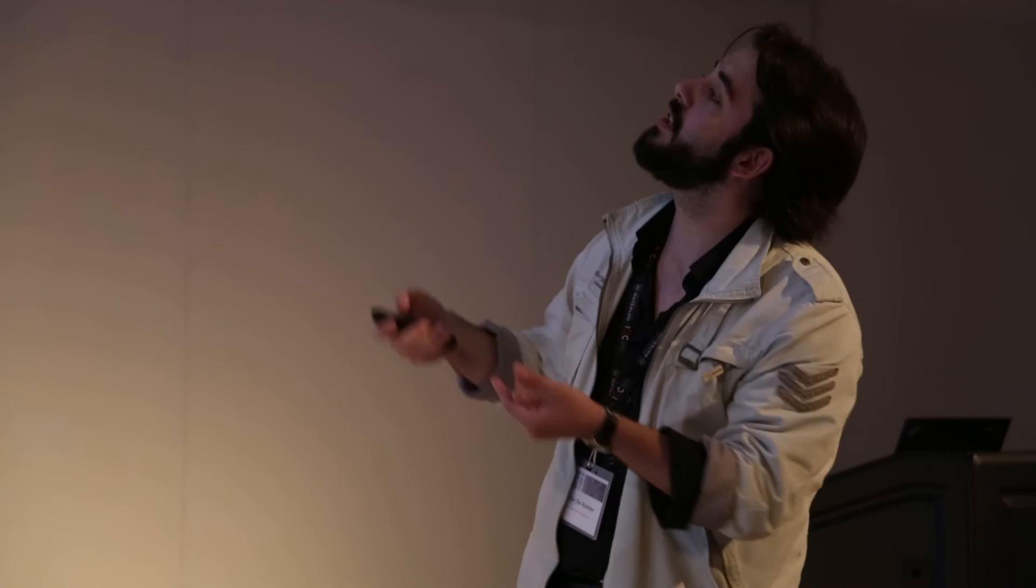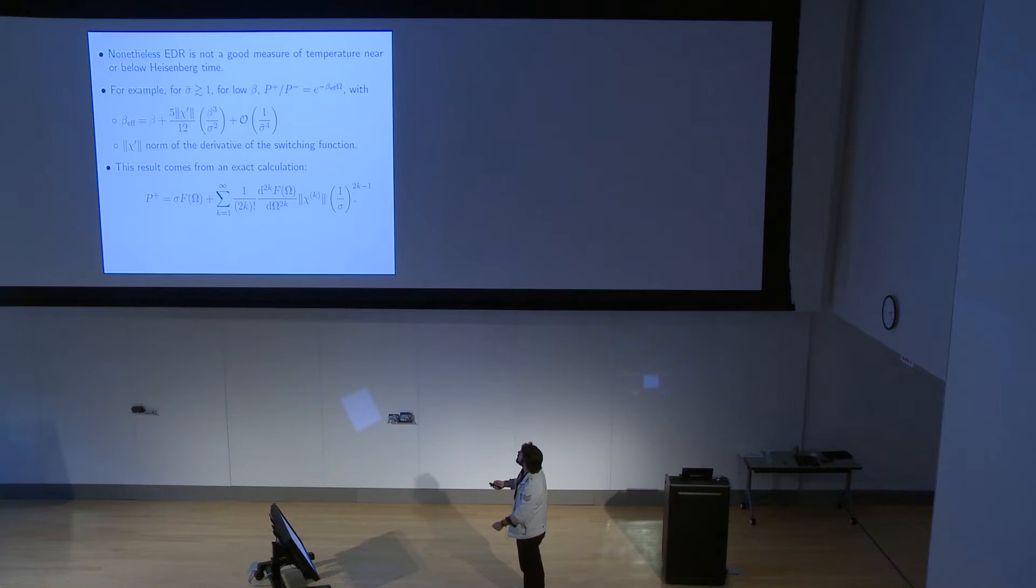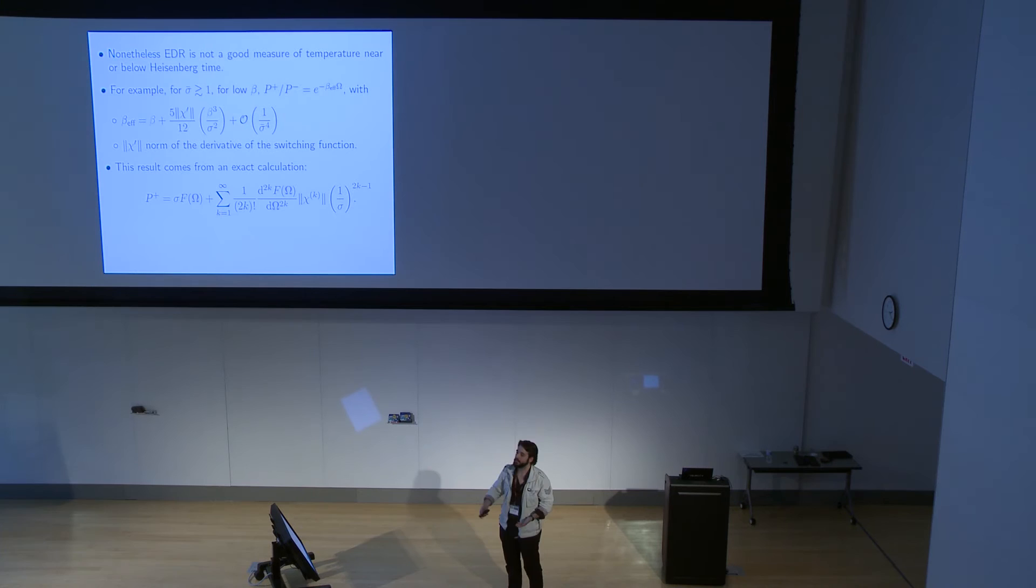Then, we have that this excitation-to-de-excitation ratio satisfied the detailed balance condition for interaction times well above the Heisenberg time. Nonetheless, we see that this excitation-to-de-excitation ratio does not give any information of the state near or below of this. We have that for this interaction times more or less at the Heisenberg time of the detector, this excitation-to-de-excitation ratio seems to have this exponential form with this effective beta that depends on the interaction time in this form. This is a result that comes from an exact calculation of this series.